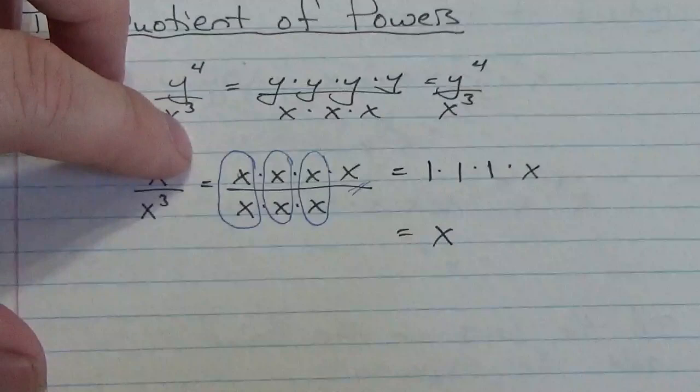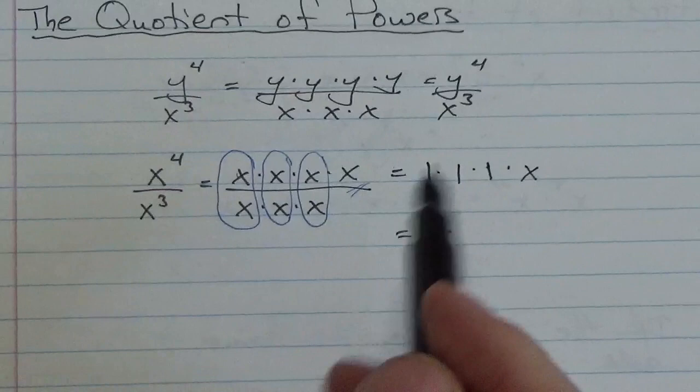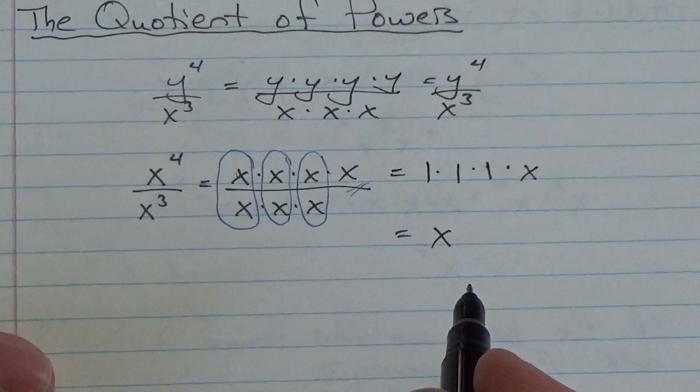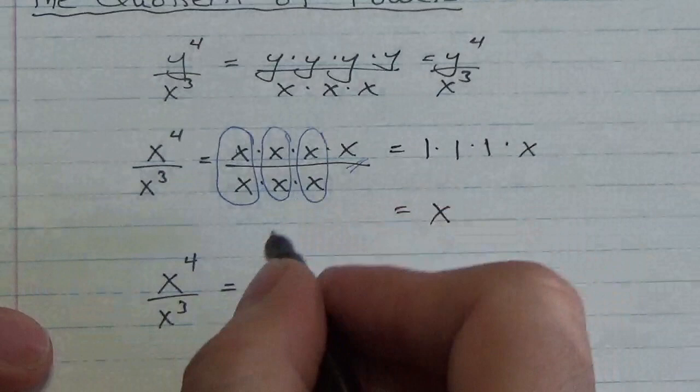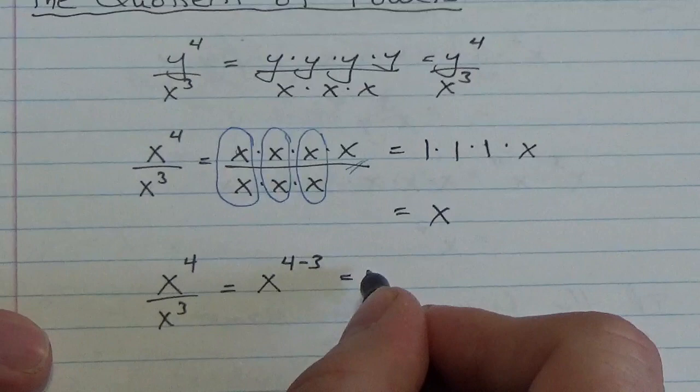So, what happens here really is from my numerator, I'm going to lose the number of factors that I see in the denominator. Well, that's just subtraction. So, what I can say here is that x to the fourth divided by x cubed, I can actually jump over all that work and get right to the answer by simply saying that this is going to be the same as x to the four minus three or x to the exponent one.